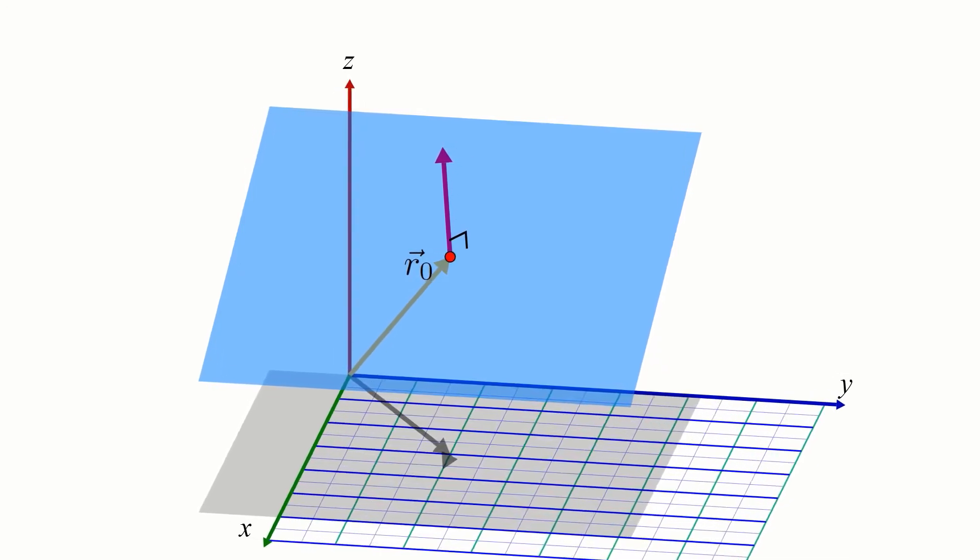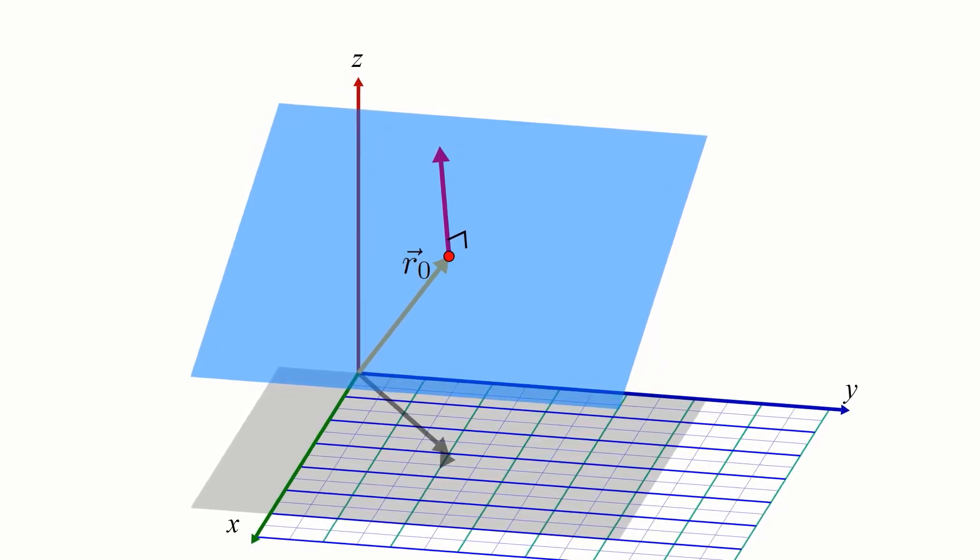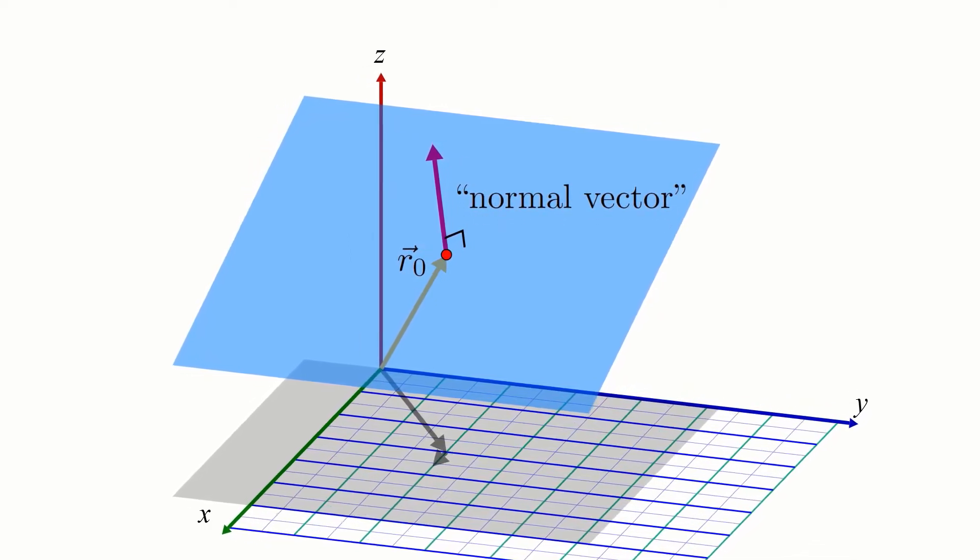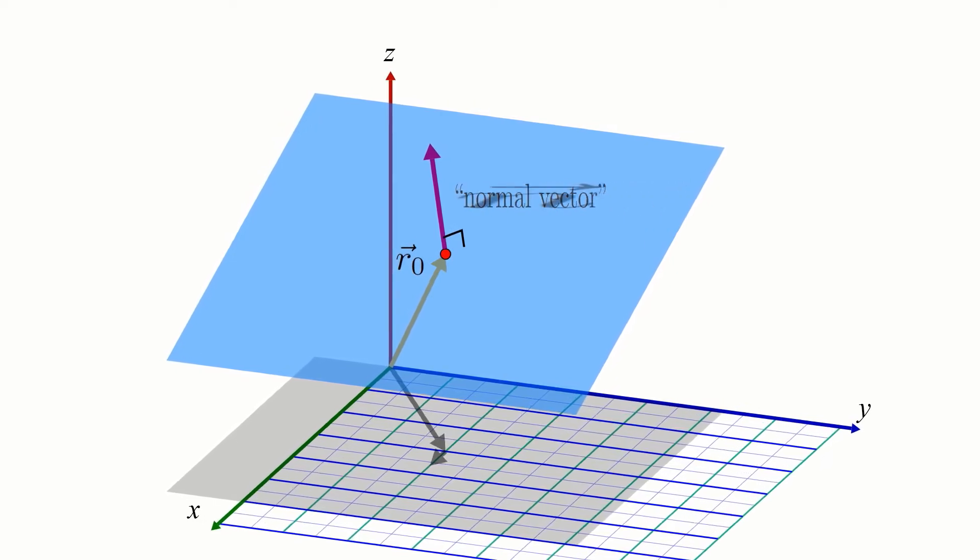The vector perpendicular to our plane that describes its orientation is called a normal vector. In math, the word normal is basically a synonym for perpendicular. Let's label it with the letter n.